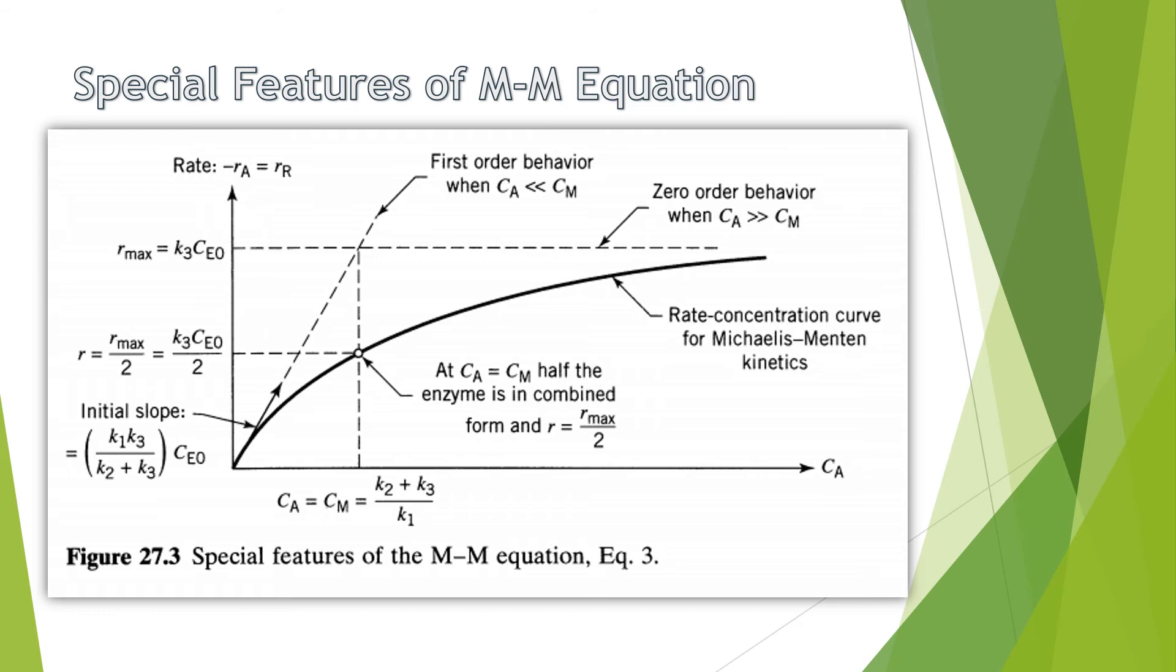After understanding the expression of MM kinetics, there are special features to the MM equation that can be observed. These special features dictate how one concentration would affect another's based on certain sections of the curve. The graph shown, without a doubt, did an amazing job of organizing these features.